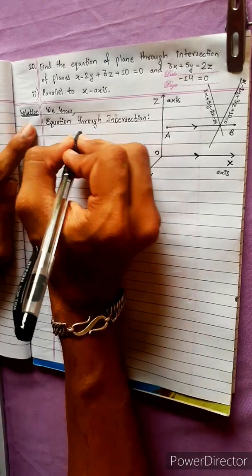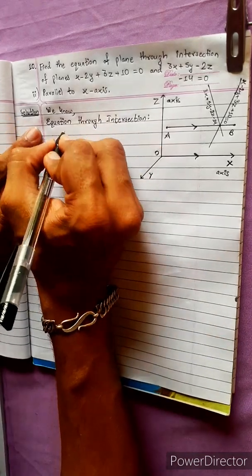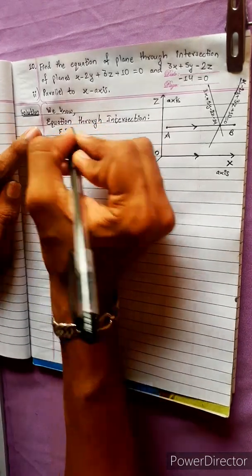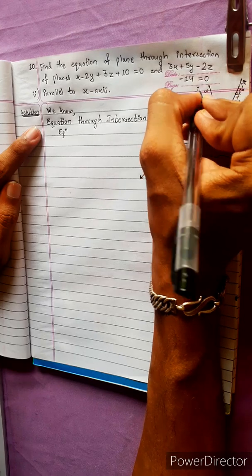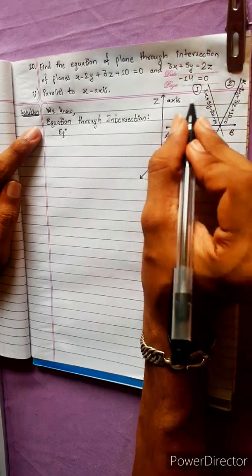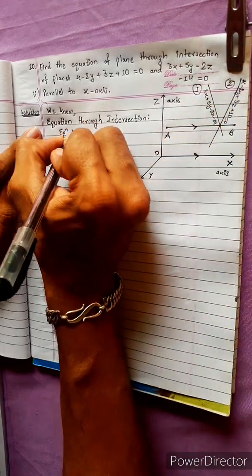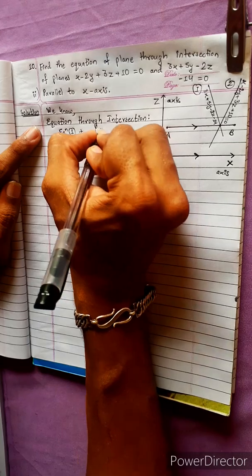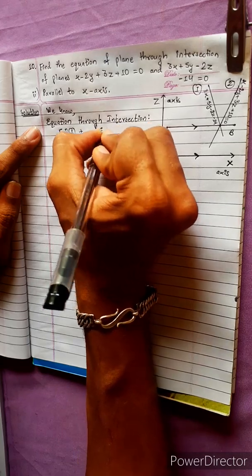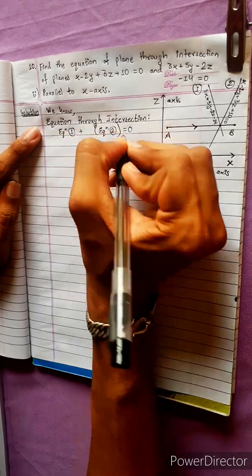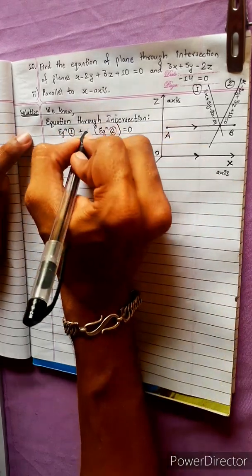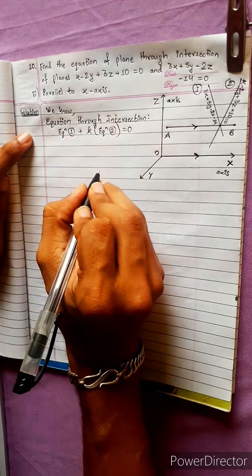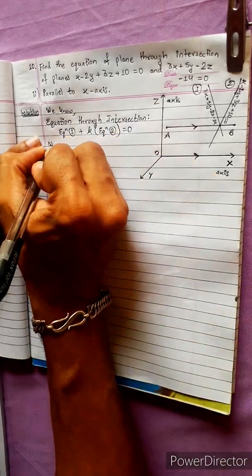We know the formula for the equation through the intersection of planes: Equation 1 plus some constant k times Equation 2, equal to zero. Suppose the constant here is k. This is the formula we will use.